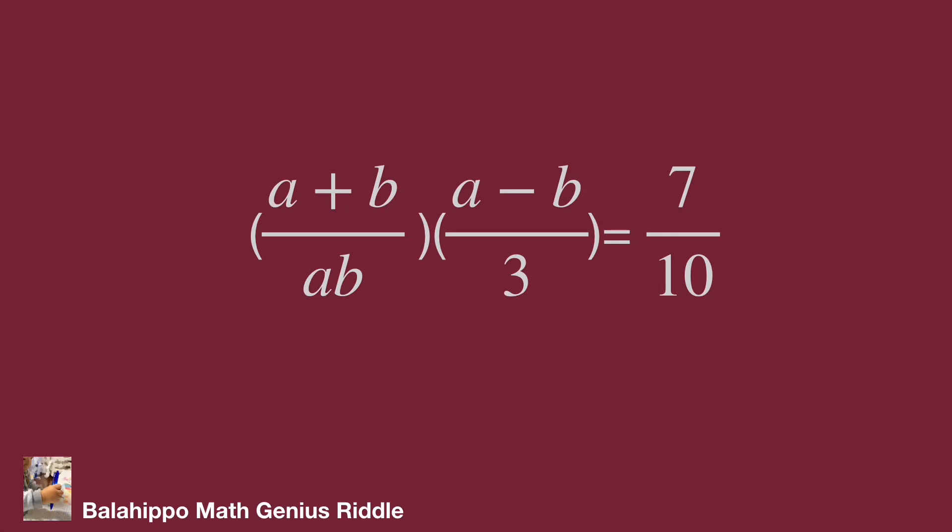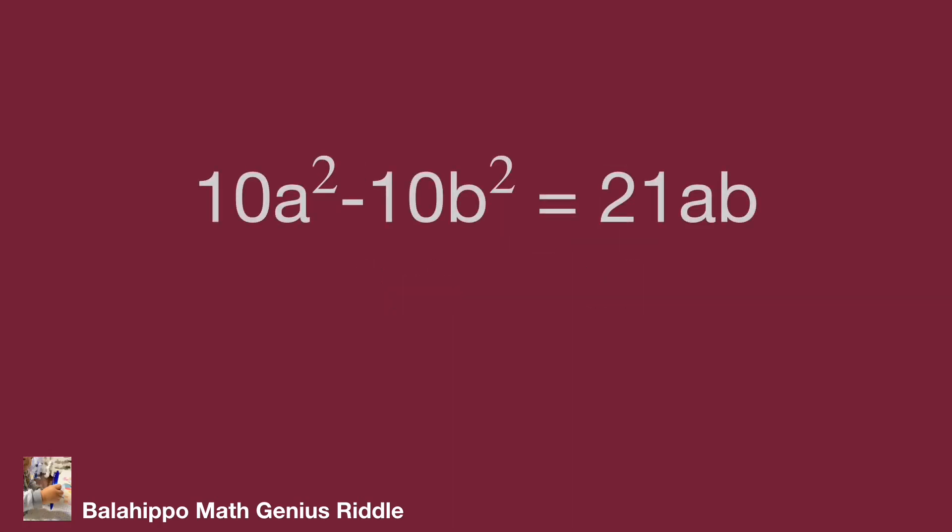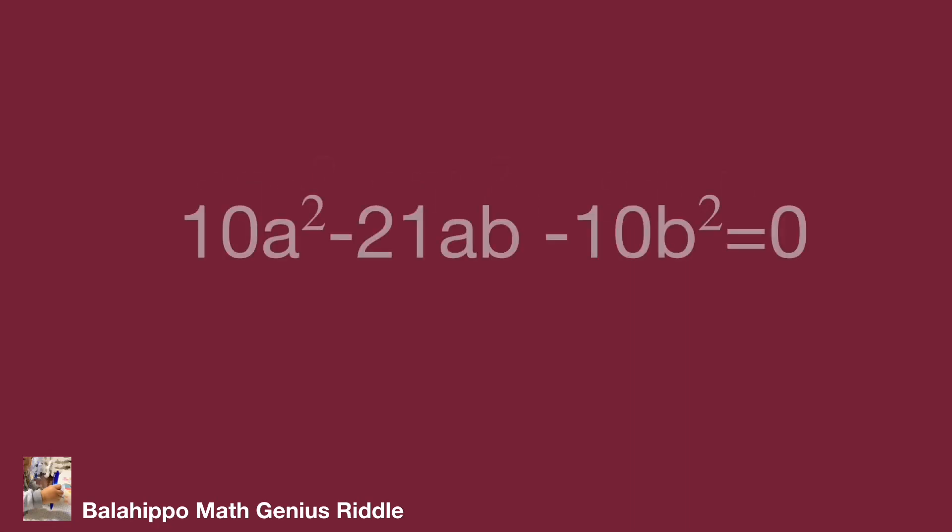Then simplify. It becomes a squared minus b squared over 3ab equals 7 over 10. This develops as 10 a squared minus 10 b squared equals 21 ab. Move all the terms to one side as 10 a squared minus 21 ab minus 10 b squared equal to 0.